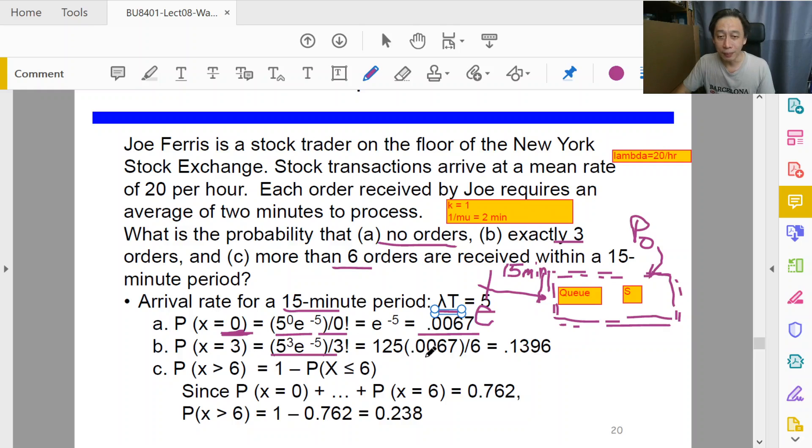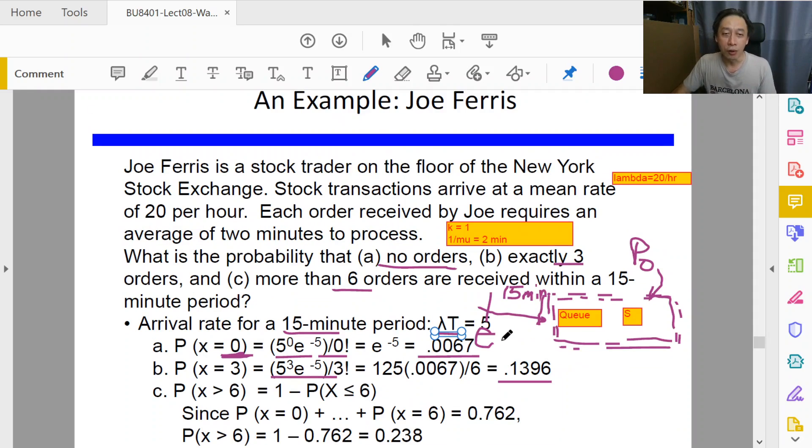Just mechanically plugging in we get these numbers. Suppose Joe says 'I would like a short break because it's been so busy in the morning. I'll just take 15 minutes break. I bet that there will be no one calling, so don't call me.' Is Joe likely to be right to take a 15 minute break and expect that no one will need his service?